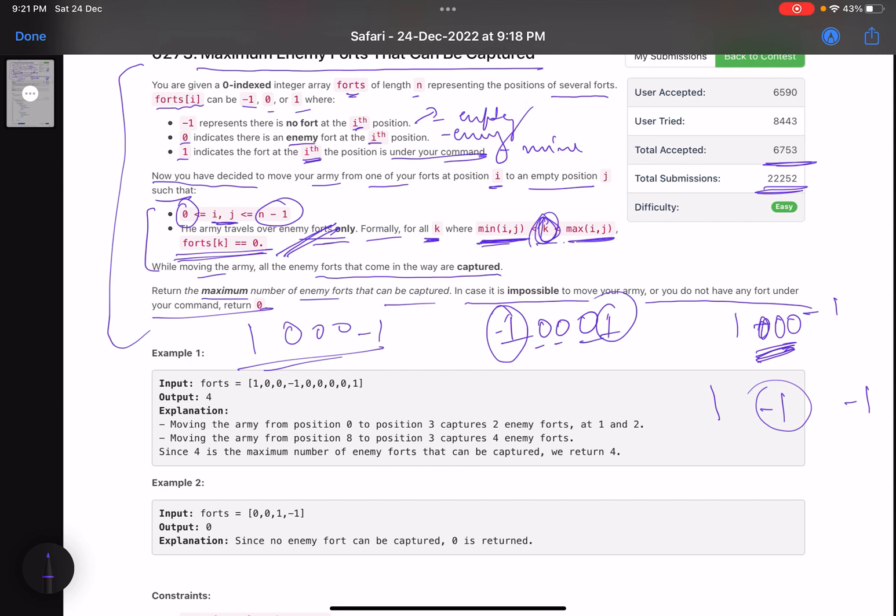As I told you in the explanation itself, this is the critical line. It says that when you are moving from one point to another point, in short, you need to find the maximum distance between 1 and -1.